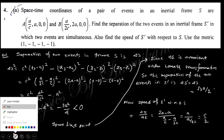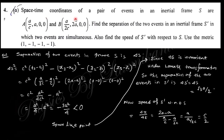Question number four says: the space-time coordinates of a pair of events in an inertial frame S are given. Find the separation of the two events in the inertial frame S prime in which the two events are simultaneous. Also find the speed of S prime with respect to S.